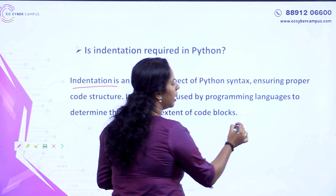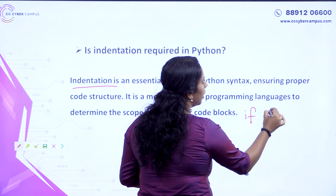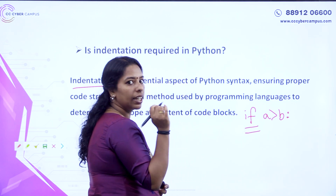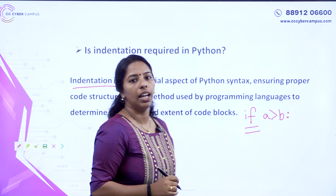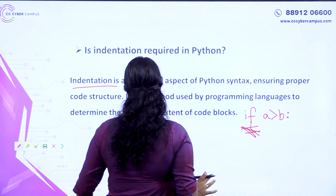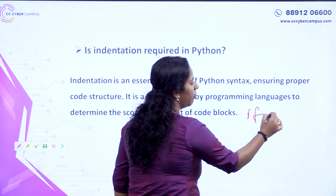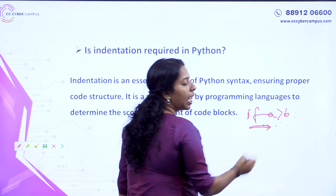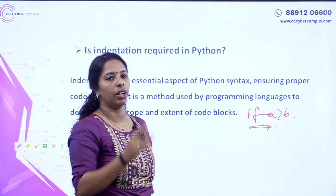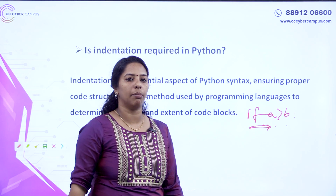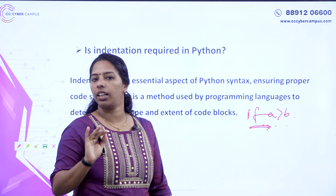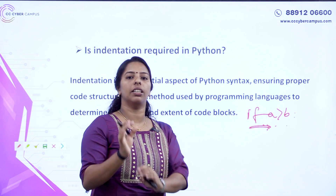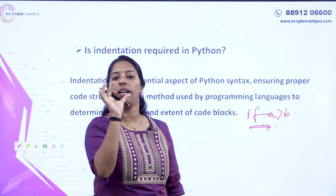I will give you a small example. If we have a condition followed by a colon, the code in the true part is written with a tab indent. That is what we call indentation — that is the programming structure. In Python, we will use a tab when writing a function or condition. That is what we call indentation.